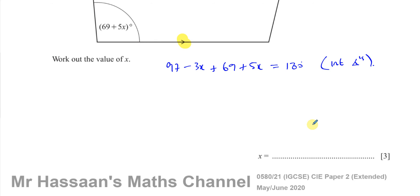So now we can work out the value of X by solving this equation. You have 97 plus 69, that's going to be 150 plus 16, that's going to be 166 minus 3X plus 5X, which is plus 2X, is equal to 180. Then we can subtract 166 from both sides. 180 minus 166 is 14. So 2X equals 14 and X is going to be equal to 7.